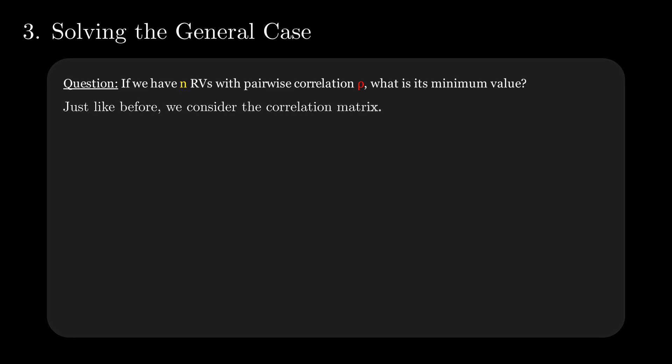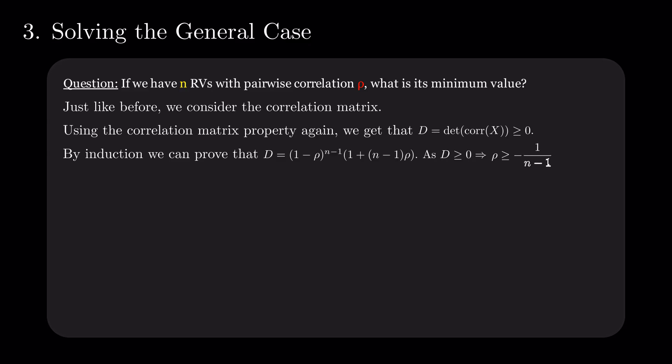Just as before, we consider the correlation matrix and its properties. The determinant of it must be at least 0. Computing it is not as trivial, since there is no generalized formula for the determinant of an n-by-n matrix. We can use the decomposition along a column, an induction, to prove that its value of d is 1 minus rho to the power of n-1 times 1 plus n-1 times rho. For this to be greater than or equal to 0, we must have that rho is at least minus 1 divided by n-1.